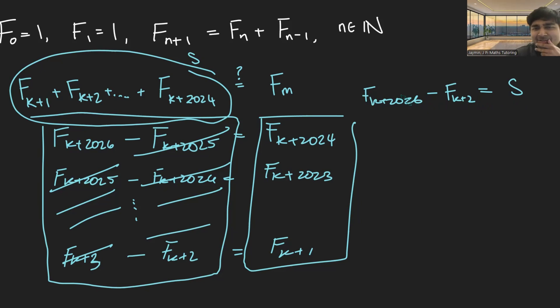But why is this interesting? Well, clearly F_k+2026 minus F_k+2 is going to be less than F_k+2026. So this number here is definitely less than F_k+2026.